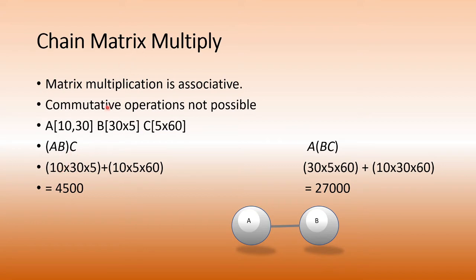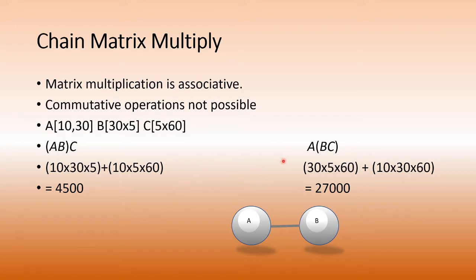We need to solve this chain matrix multiply problem to find the most optimal computation order. Matrix multiplication is associative — you can choose which multiplications to do first — but it is not commutative: you cannot swap A×B into B×A. Think of the chain of matrices like a chain of hotels; they cannot be reordered or permuted. The only thing you can do is choose where to place the parentheses.